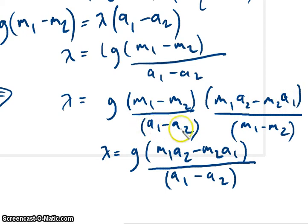Divided by A1 minus A2. As here. The G stays. And then I've got a term or an expression for lambda.